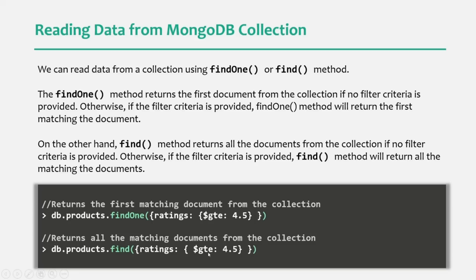We are going to talk about this operator in great detail in our coming lectures. Using this operator, we are telling MongoDB to find all the documents from the products collection where the rating is greater than or equal to 4.5. Inside the filter object, we can use MongoDB operators. Just like greater than equal to, we also have other operators like less than, less than equal to, greater than, in, nin, etc. We will talk about all these operators in great detail in this section.